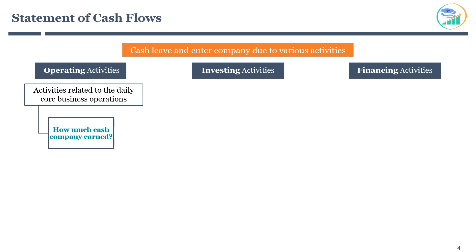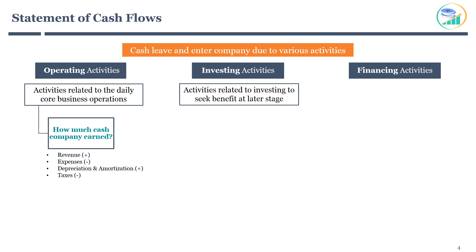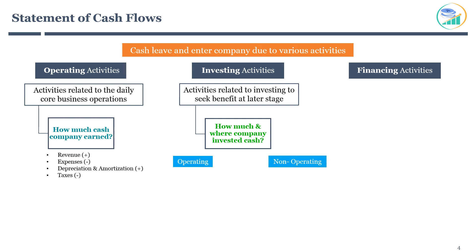Operating activities record cash entering or leaving the company due to core operations. This includes revenue from sale of products or services, expenses, taxes, depreciation, amortization, and so on. The next line item is investing activities, which refers to activities related to investing to seek benefit at a later stage — in short, how much and where the company invested cash. It is primarily divided into two types: investment related to operating and non-operating assets.